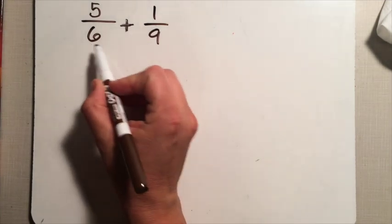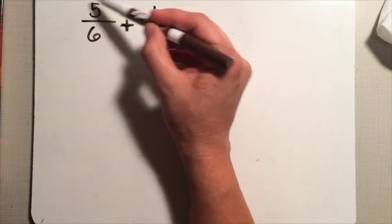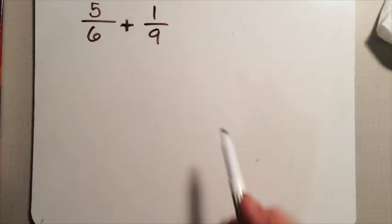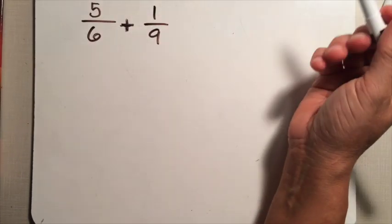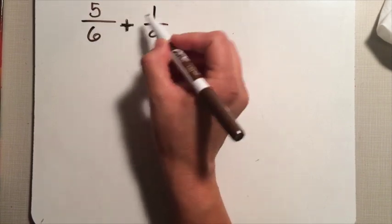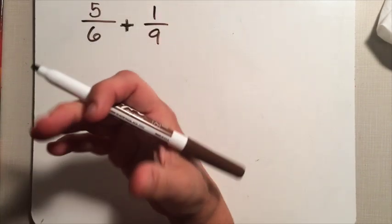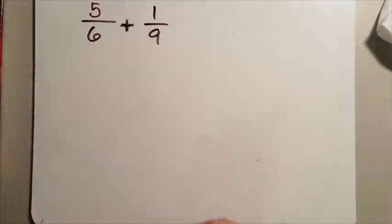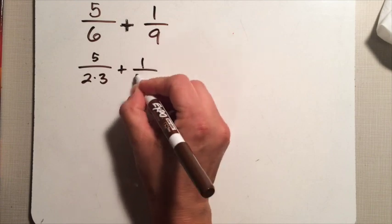If we are adding two fractions together, we're combining two quantities. Maybe we have five-sixths of a tray of brownies and one-ninth of a tray of brownies, or five-sixths of a pizza and one-ninth of a pizza. We can't just add these together because these pieces aren't the same size. So what we need is a common denominator. When we're combining fractional quantities, we need a common denominator, and here is where our prime factorization helps us out.